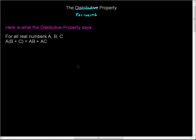So here's what the distributive property says. The distributive property says for all real numbers A, B, C, and you can pick any three you want, if you take the first number there, you can distribute that multiplication to both B and C, so that you have A times B plus A times C.